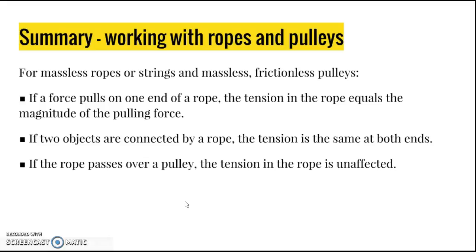To summarize working with ropes and pulleys — assuming ropes, strings, and pulleys are all massless and frictionless: if a force pulls on one end of the rope, the tension equals the magnitude of that pulling force; if two objects are connected by a rope, the tension is the same at both ends; and if the rope passes over a pulley, the magnitude of tension is unaffected. We'll apply these concepts to problems in class, using force pairs and equal accelerations of interacting objects to identify equal variables and solve.